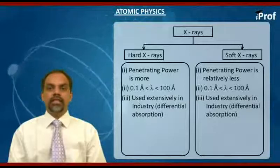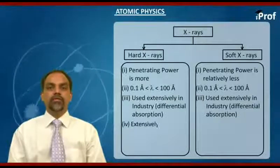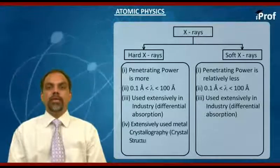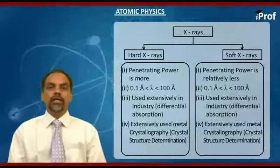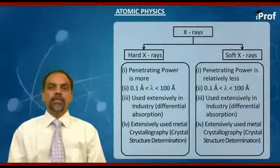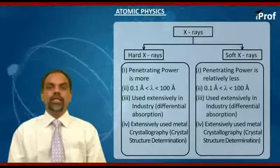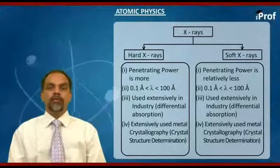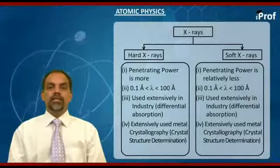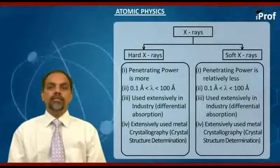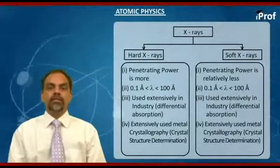Softer X-rays are used by doctors for examination of the body. One more extensive application of harder X-rays is in metal crystallography, which is the field dealing with crystal structure determination. This use is based on the fact that the wavelength of X-rays is comparable to the lattice spacing — the atomic spacing — in most materials. These materials are exposed to X-rays, which undergo diffraction, and we record the diffraction pattern. From the diffraction pattern we interpret the crystal structure.